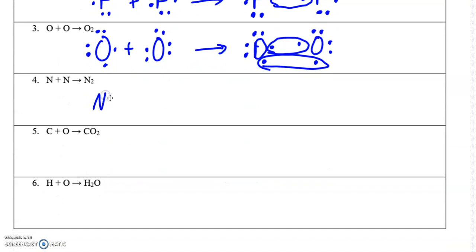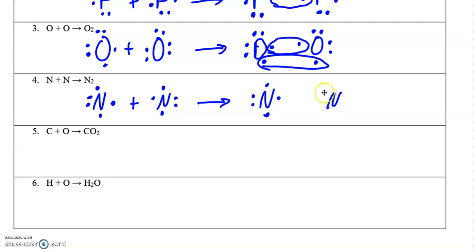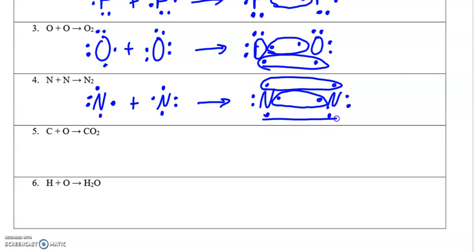Nitrogen has five valence electrons. It's in group 15, that's how you predict that. Sharing one pair isn't quite enough — you only get six. So if we go two more pairs, we'll get to an octet, forming a triple bond. The difference between these bonds: single bond for fluorines, double bond between oxygens, triple bond between nitrogens. Triple bonds are stronger — they require more energy to break, and they're shorter. The nitrogen atoms are actually closer together in the triple bond than fluorine atoms are in the single bond.